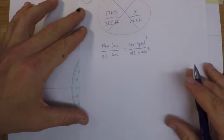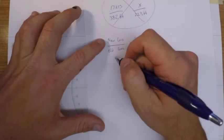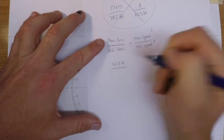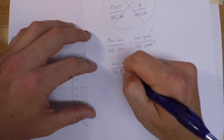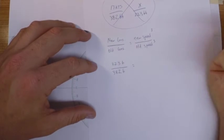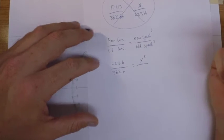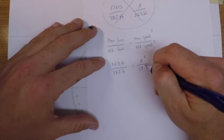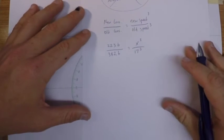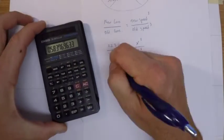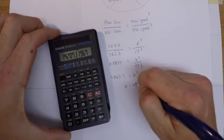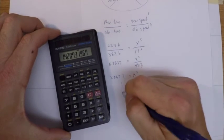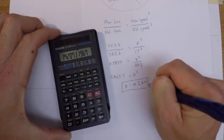In this case our new consumption was 223 barrels and our old consumption was 382 barrels, and we're looking for the new speed, that's X cubed, and our old speed was 17 knots cubed. So if we solve this out, our new speed ends up being 14.2 knots.